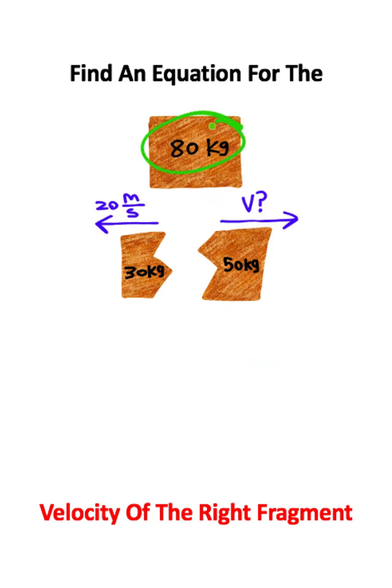Now in this diagram, we're given masses and we're also given velocities. Whenever you see masses and velocities in a diagram, that's a good sign that you're going to need to use momentum, since momentum is mass times velocity.